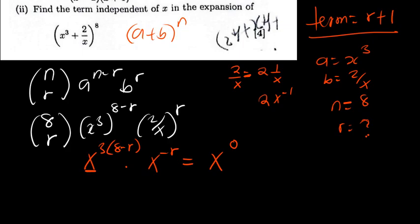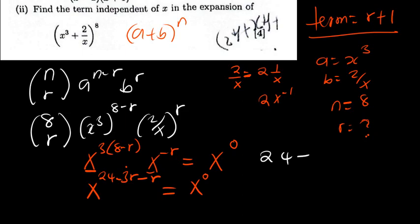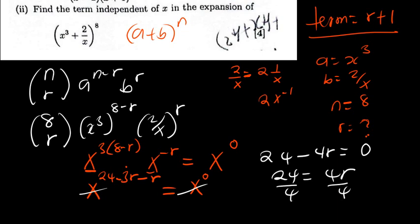If the bases are the same and you are multiplying, we add the powers. So 3 times 8 is 24, giving x to the power 24 minus 3r. Then minus r, making it negative 4r total. Setting this equal to x to the power 0, if the bases are the same we equate the powers: 24 minus 4r equals 0. So 24 equals 4r, divide both sides by 4, and r equals 6.